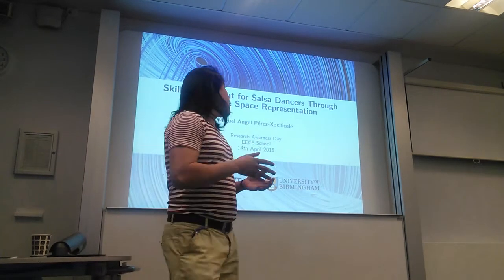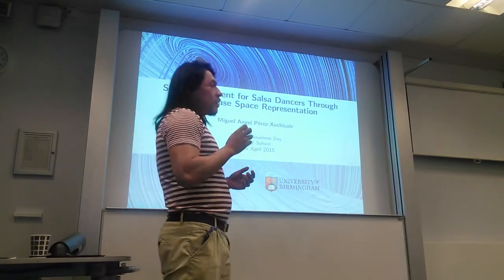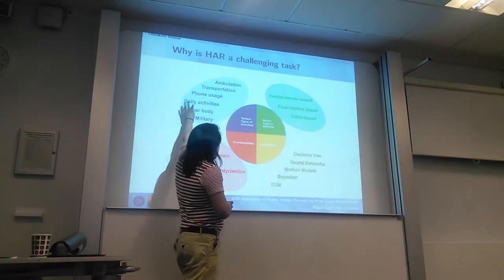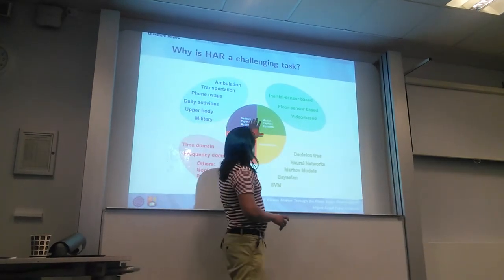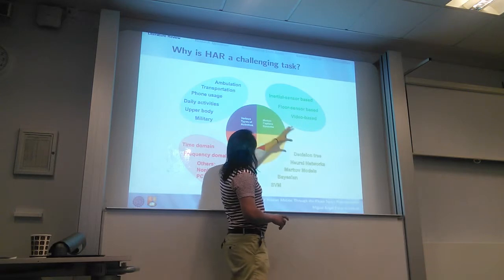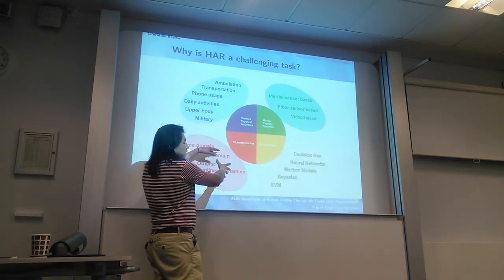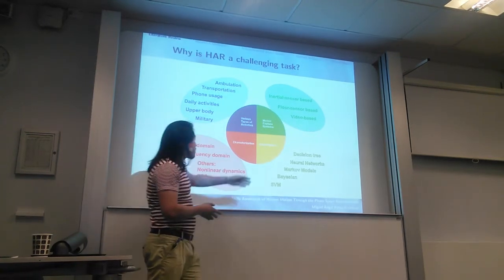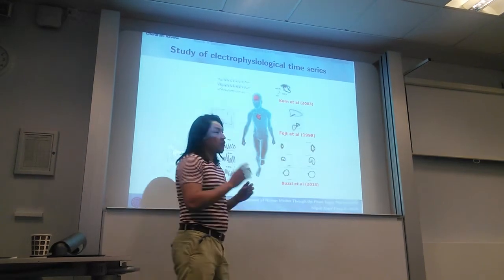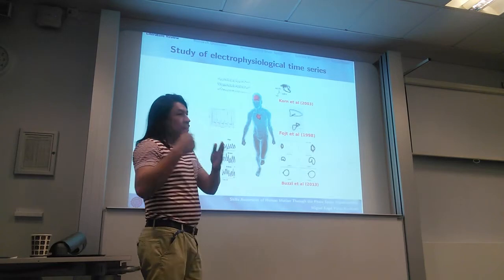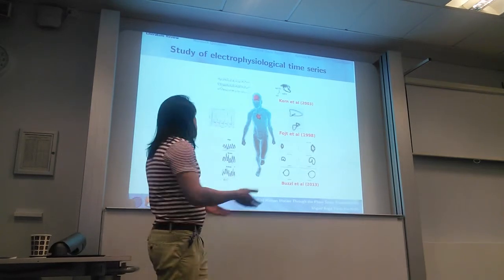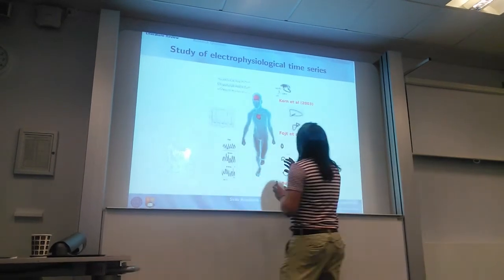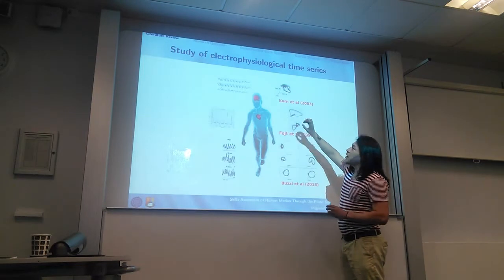The first question to ask is why human activity recognition is a challenging task. We have different types of activities to recognize, as well as many different motion capture systems to use. It's also important to mention that we have different time domains for time series analysis and classification algorithms. The idea is to use time series from inertial sensors, treated as non-linear dynamical systems by using the state space representation.